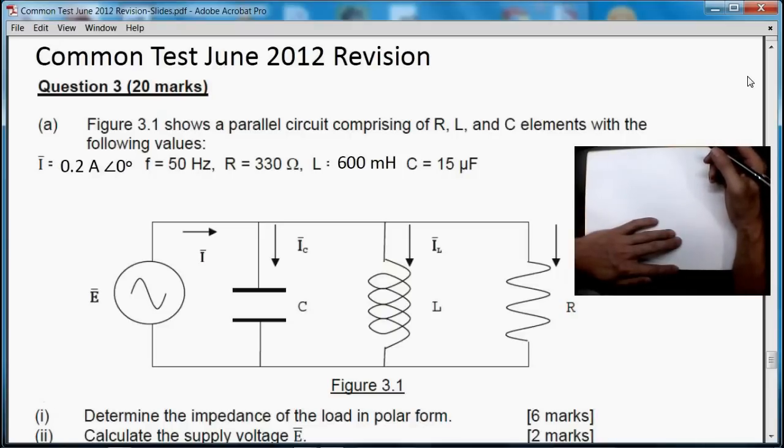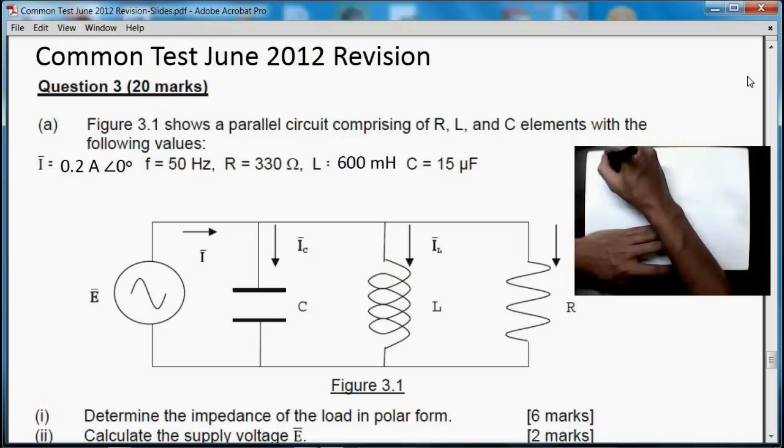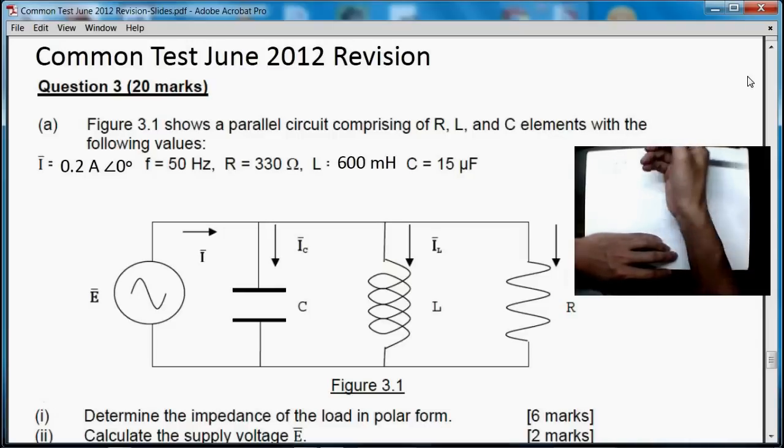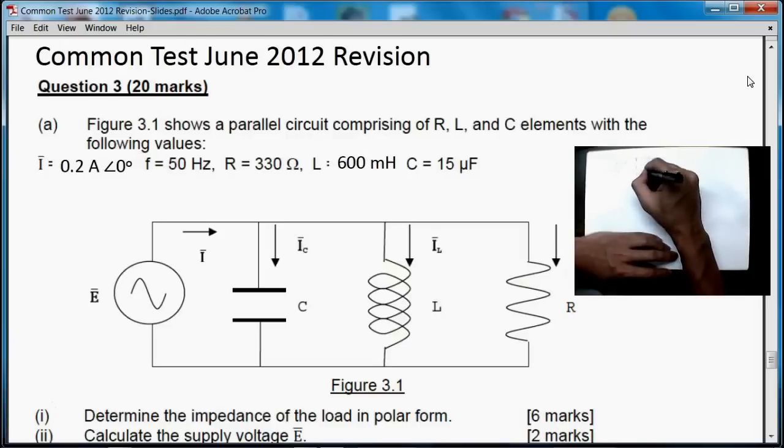The incoming current is given as I phasor = 0.2 amps at an angle of zero degrees, frequency of 50 Hertz, and the resistor value is 330 ohms. The inductor is 600 millihenries and finally the capacitor is 15 microfarads.